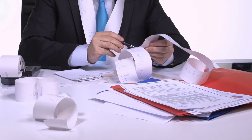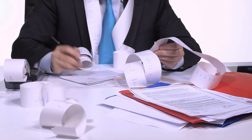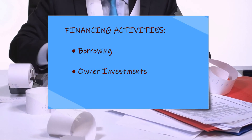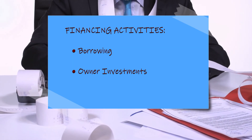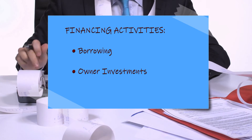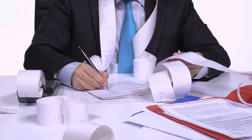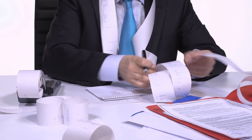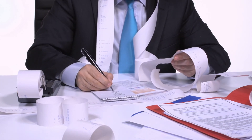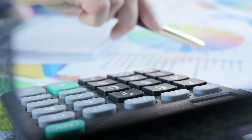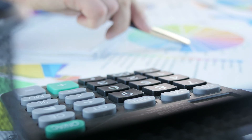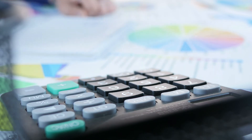Financing activities of a business include borrowing transactions and owner investments into the company. Financing creates liabilities. A liability is a legal obligation to repay a creditor at a point in the future based upon terms set by the creditor. A business can also be financed by its owners making investments in the organization. When a company borrows money, it incurs a liability, which is a legal obligation to repay the amount borrowed according to the terms of the borrowing agreement.